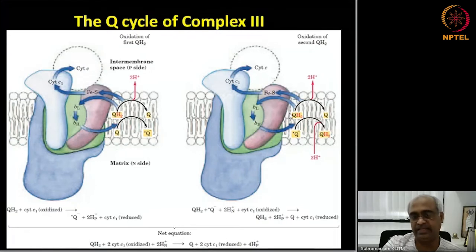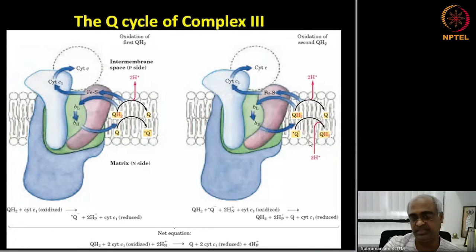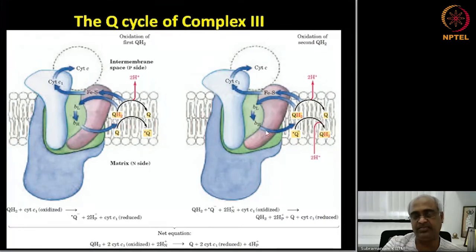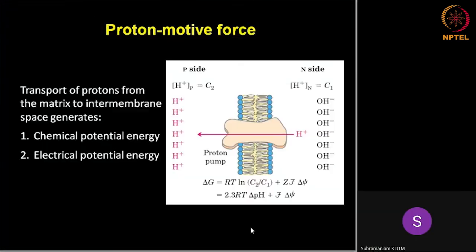The electron has come back but the proton has not — it is pumped out. As a result, we take protons from the matrix side to fully reduce it to QH2. Here both protons are gone, and here again both protons are gone. This is a radical, and to fully reduce it you need to take the two protons through these electron transfer carriers.